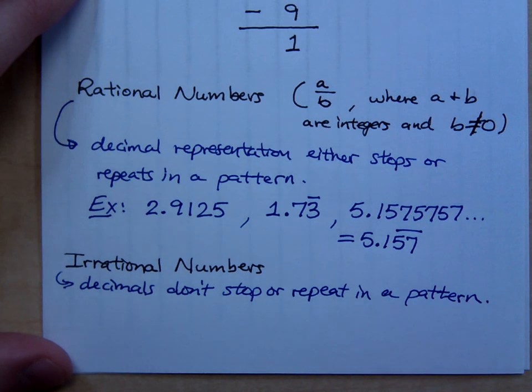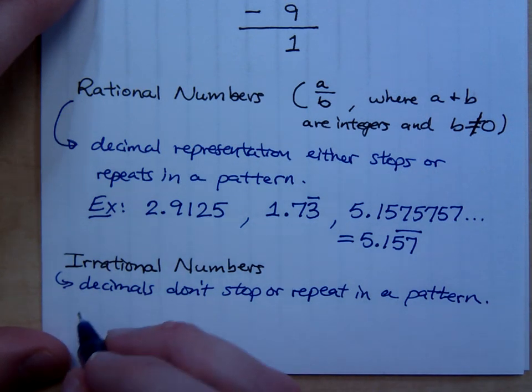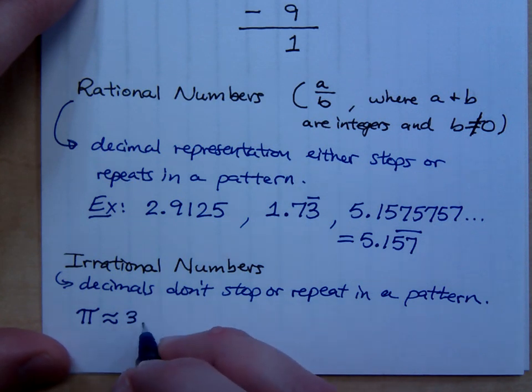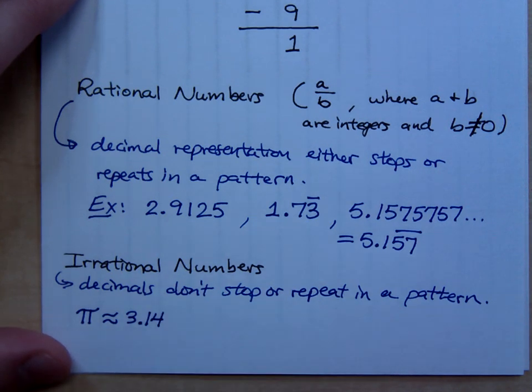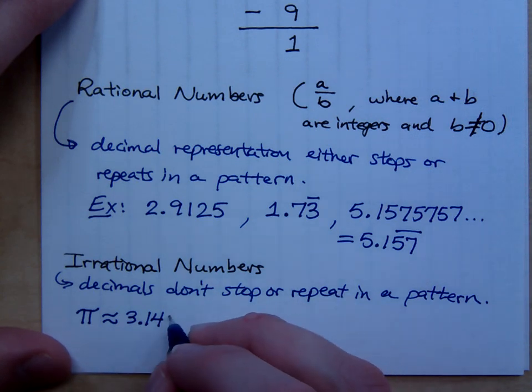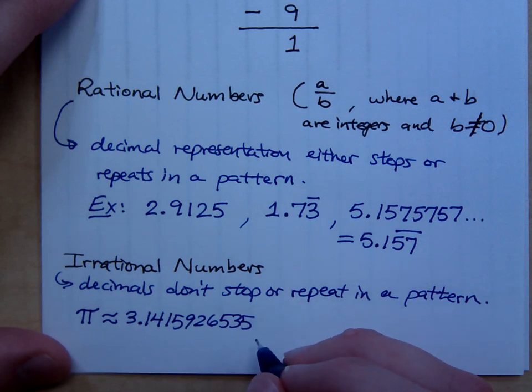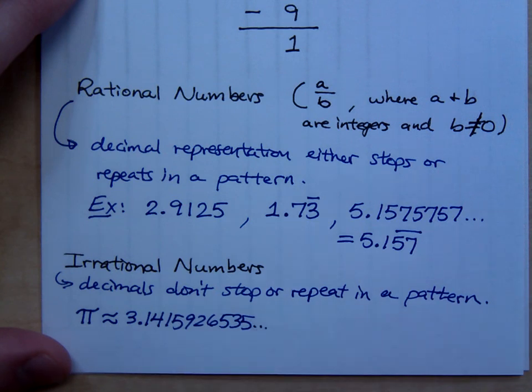There are some irrational numbers that you guys already know, I bet. One of the most classic irrational numbers is pi. And pi is a ratio of the circumference of a circle to its diameter. And we would normally approximate pi to be what? What do you guys remember? 3.14, which is why people may have celebrated Pi Day on March 14th. Now, it keeps on going. 3.1415926535. There's no pattern to this. It just keeps going.